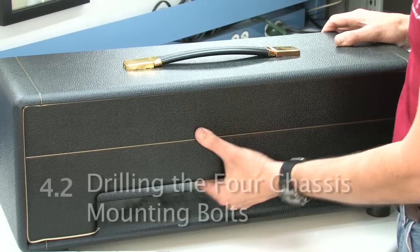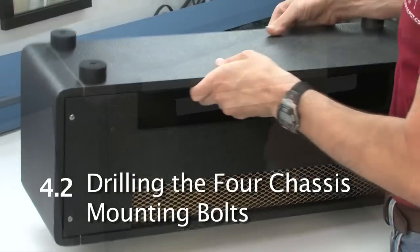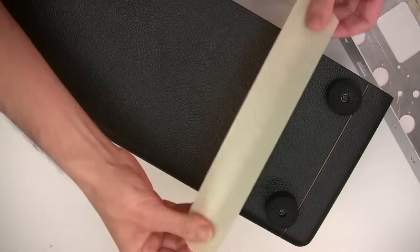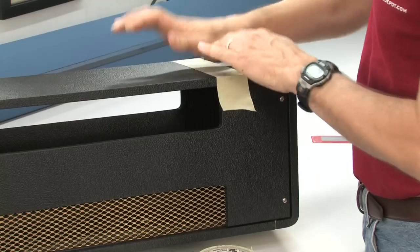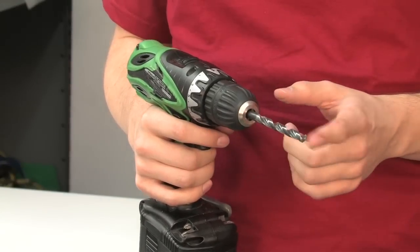To build this kit, the first thing we do is take the cabinet and cut holes for the chassis. Take some tape and put it right next to the feet. It's goggle time. Now we're going to drill our holes with a 5/16 inch drill bit.